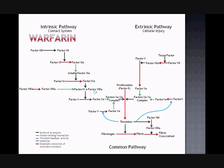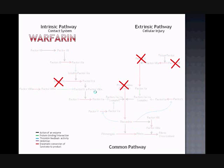In order to present warfarin, it is important to reintroduce the coagulation cascade diagram from earlier in this presentation. Since this is such an information-dense diagram, the important thing to understand is that warfarin indirectly inhibits the maturation of coagulation factors 2, 7, 9, and 10, therefore inhibiting the cascade from proceeding and producing fibrin.